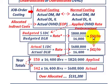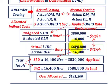So for every direct labor hour, we have to charge $50 in overhead based on our budgeted amount. For our actual indirect costs for the year, we have $688,800 actual, and the actual direct labor hours are 16,400. So that gives us an actual overhead rate of $42 per hour.